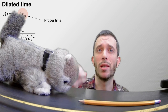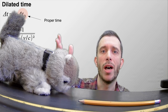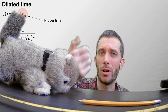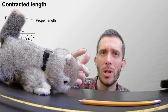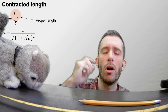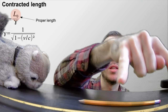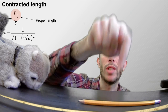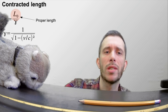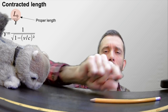As a summary: the proper time is measured in the frame of reference where the event happens at the same location, so you do not have to look at two different places in order to start and stop your timer. The proper length is measured in the frame of reference where both ends of the distance you are measuring are not moving relative to you — basically you can lay down a measuring tape, and no matter how long you leave it there, you will always measure the same distance for the two points, since they are not moving relative to your measuring tape.